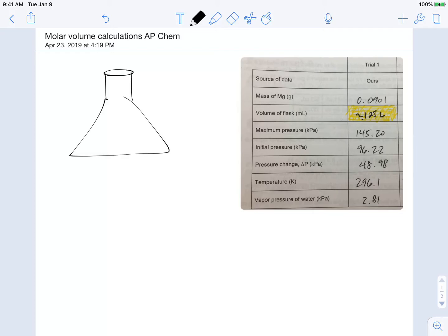So what we did is that we had an Erlenmeyer flask. We weighed out around, or measured out, about 10 centimeters of magnesium and then got the mass of that. We put that into an Erlenmeyer flask, so here's our magnesium. And then we added an excess of hydrochloric acid, some 3 molar, to make sure that all the magnesium reacted. And when the magnesium reacted, it formed some hydrogen gas.